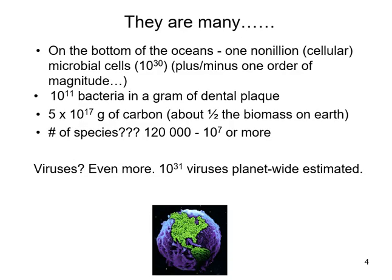A really neat thing about microbes is that they are everywhere — there are so many of them. If you were to look on the bottom of all of the oceans that cover the planet, which is a vast amount of space, it is estimated that there are about one nonillion cellular microbial organisms — that's 10 to the 30, plus or minus an order of magnitude, because it's actually really hard to figure all this stuff out. If you look at just dental plaque, if you were to scrape off a whole gram of dental plaque, there would be about 10 to the 11 bacteria alone in that dental plaque — not even touching on all the different viruses within those bacteria.